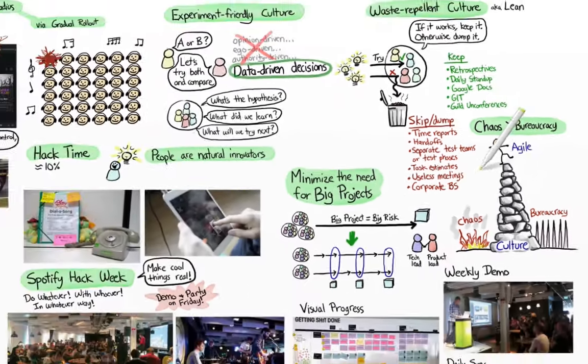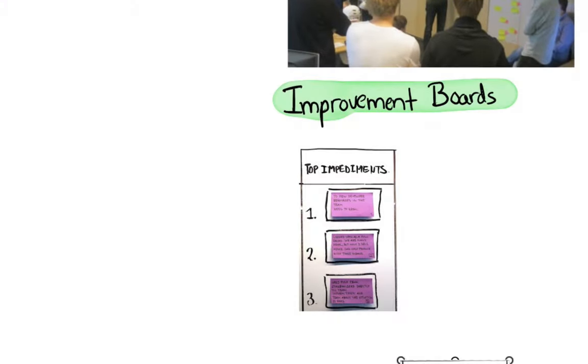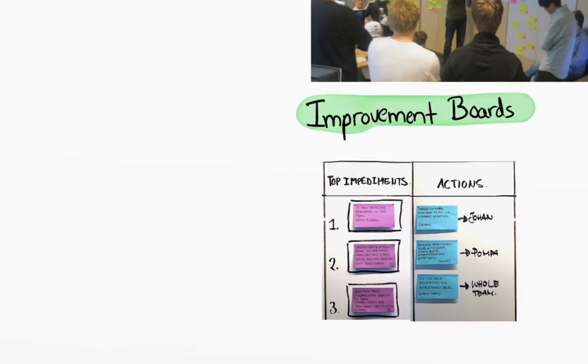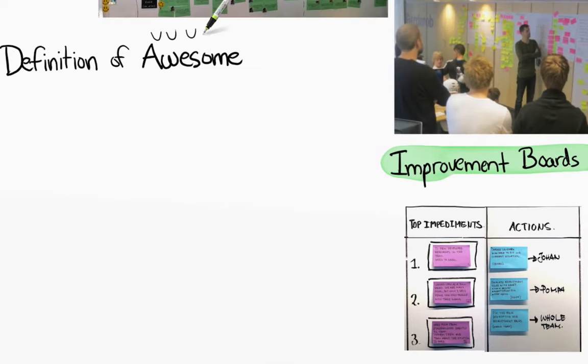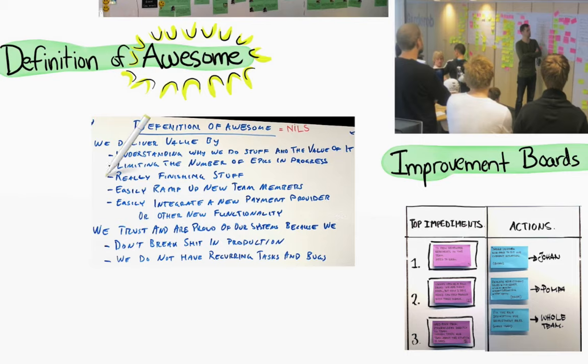The key thing about reducing waste is to visualize it and talk about it often. So in addition to retrospectives and postmortems, many squads and tribes have improvement boards that show things like what's blocking us and what are we doing about it. We also like to talk about definition of awesome. For example, awesome for this squad means things like really finishing stuff, easily ramping up new team members, and no recurring tasks or bugs.